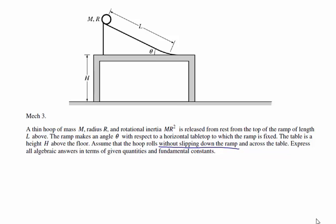If something is rolling without slipping, there are a couple of things that this means. The first is that we can look at this as a combination of pure rotation around its center of mass, as well as translational motion of the object, looking at the velocity of the center of mass.